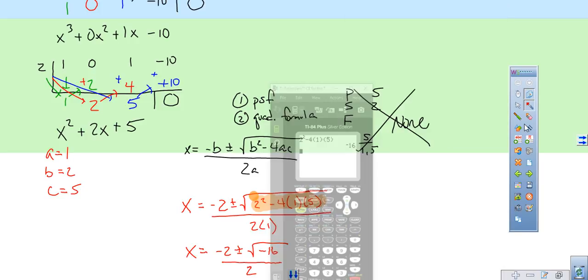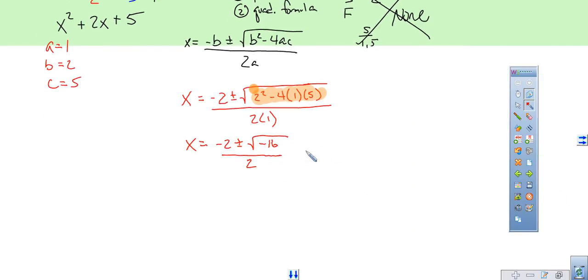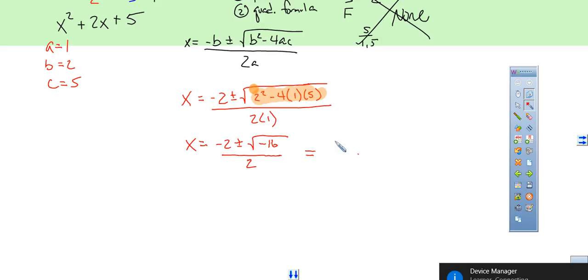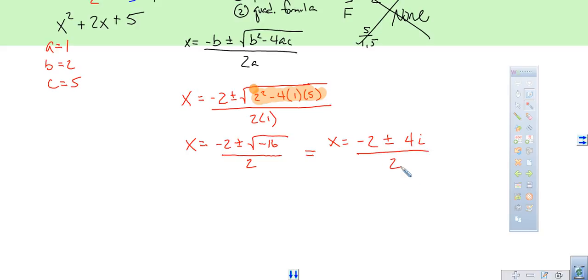So we have negative 2 plus or minus the square root of negative 16 over 2. All right, so let's close that out. Now, at this point, we should be able to finish this guy off and kind of really grasp what's happening here. And so we say we have x is equal to negative 2 plus or minus. So remember, 16, the square root of 16 is 4. But then we have the negative we need to deal with. The negative comes out as an i.